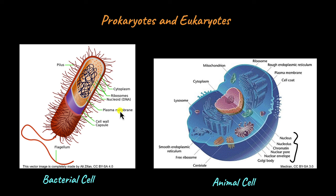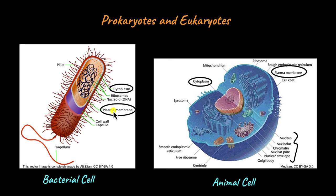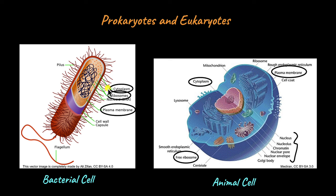That doesn't mean these two types of cells share no similarities. One of the main similarities is that both have cytoplasm — the jelly-like substance within the cell. In prokaryotes, the DNA floats within the cytoplasm; in eukaryotes, all the organelles and the nucleus are embedded within the cytoplasm. Both prokaryotic and eukaryotic cells are covered by a plasma membrane, or cell membrane, which covers and protects the cell and acts as a semi-permeable membrane in both. They also both have ribosomes — small, non-membrane-bound structures involved in protein synthesis.